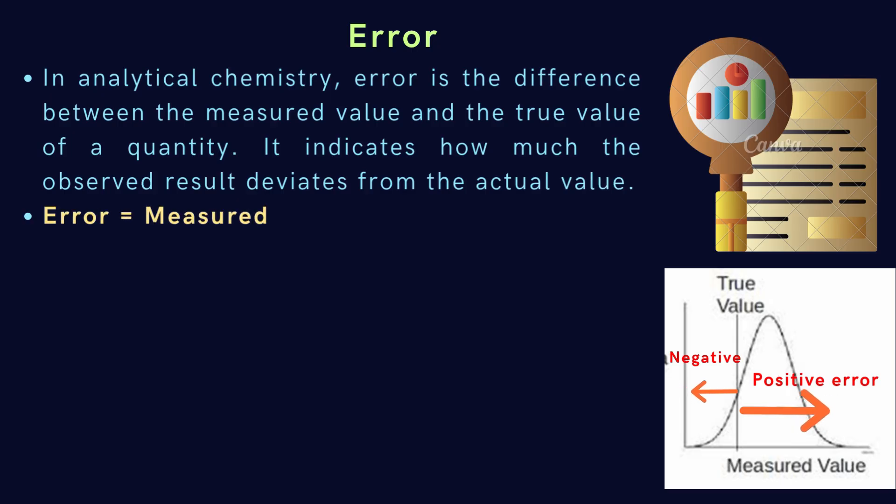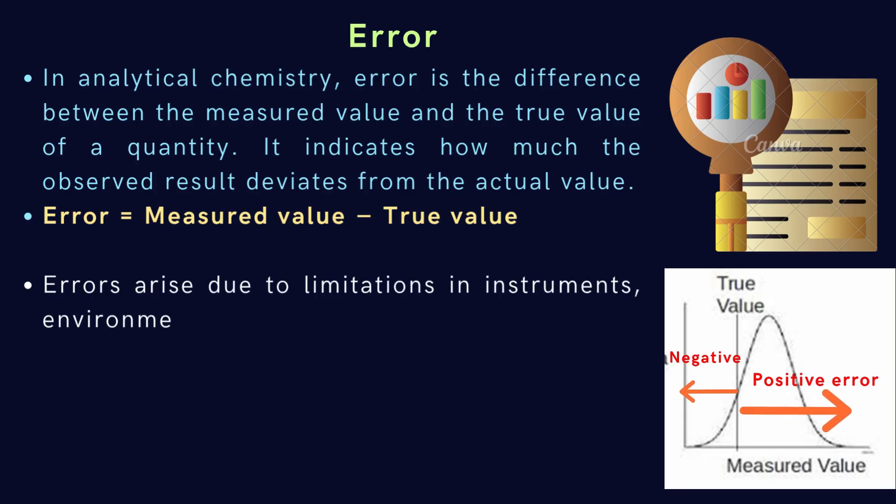Mathematically, it's expressed as error equals measured value minus true value. Errors can arise from many sources: limitations in instruments, environmental factors, personal mistakes, or imperfections in experimental methods.